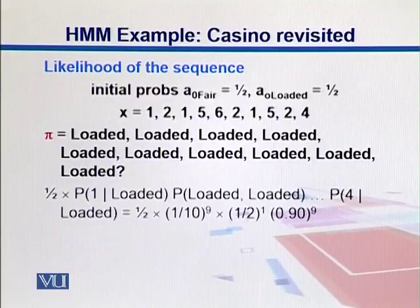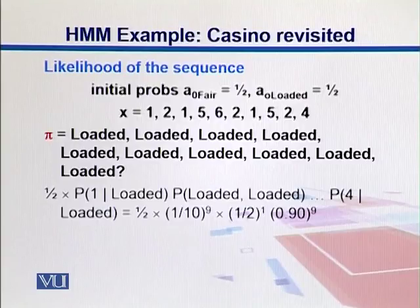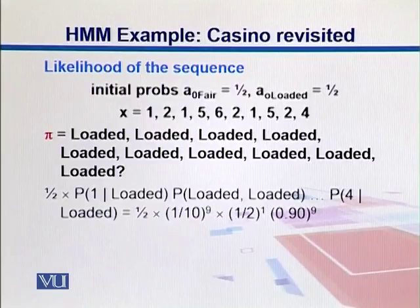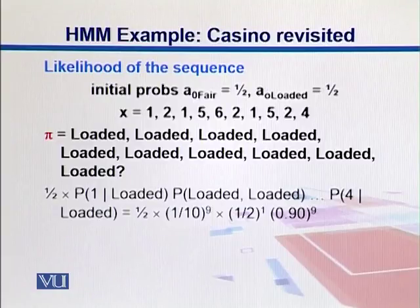And same way we will have those state transition probabilities since we are assuming that every position is loaded. So we are interested that in all trials are based upon a loaded die. So we will put 0.9 and multiply it 9 times.